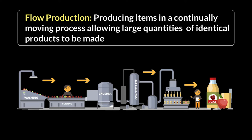The inputs go in at the beginning and there is no stopping in the middle — unlike batch production where bread may have to be taken out of the oven to cool down. There is no breakage; as soon as the inputs go in, the process starts, and the only time it stops is when the final product is made. It's one continuous flow, making large quantities of identical products.